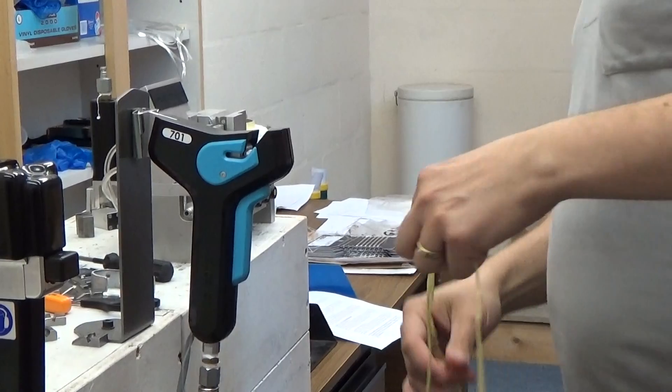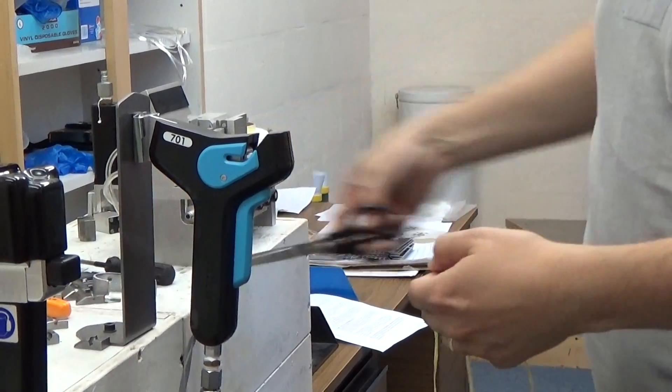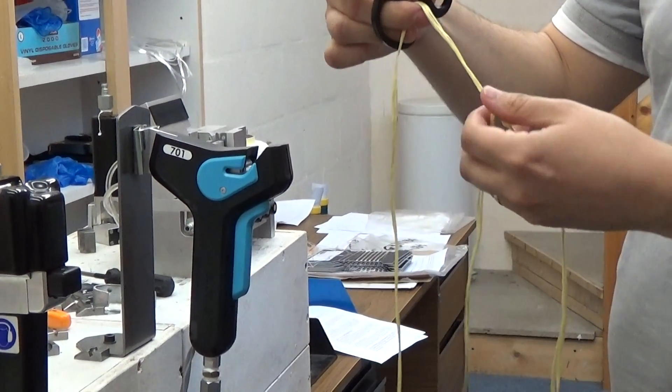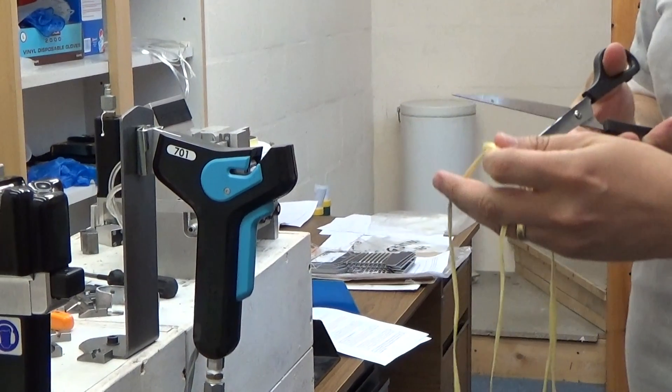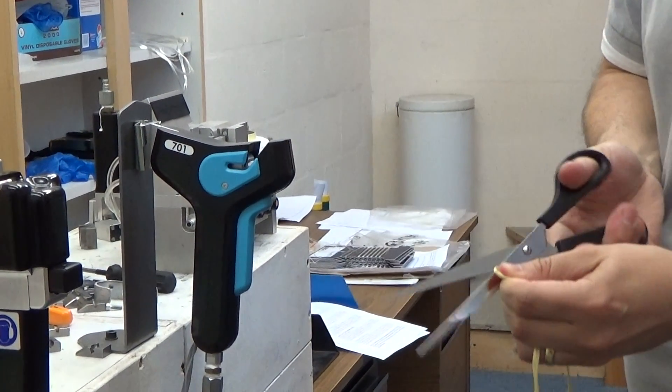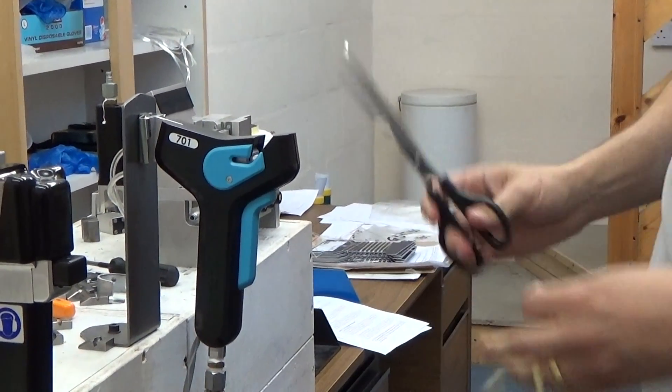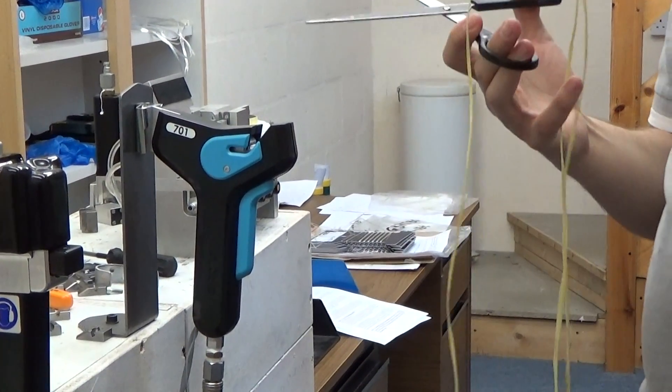You probably only need one or two splices to achieve maximum strength, but it's up to you. You can create up to ten splices if you require. So you manually trim away the tail ends.